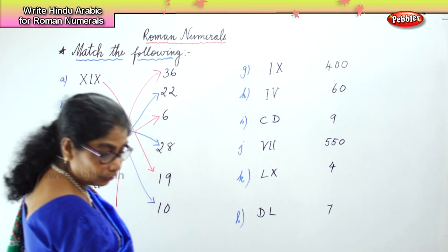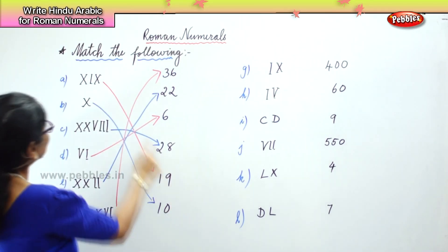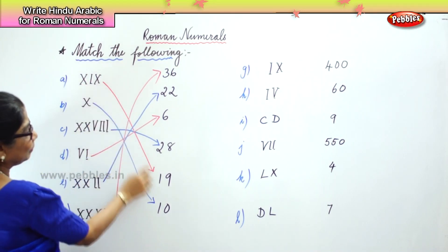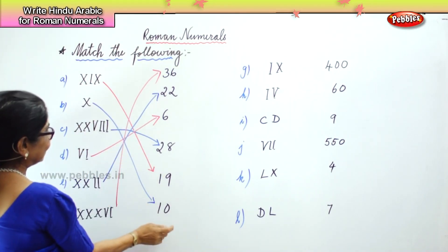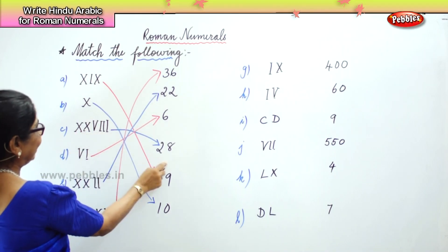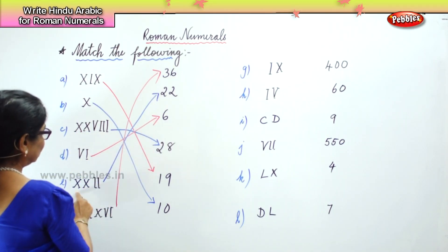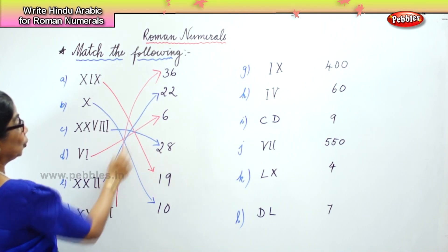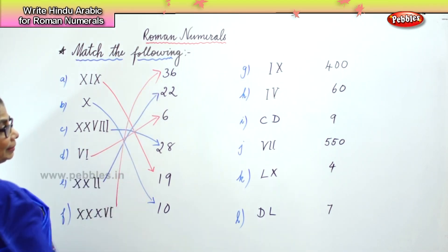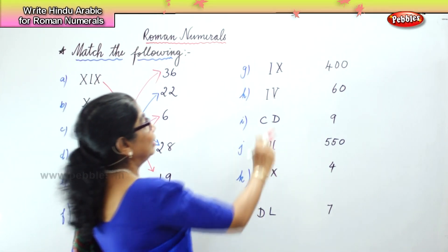Now let's look at all the matching we have done: 9, 10 and 9 is 19. Next is 10. Then 10, 20, 28, 6, 22, and 36.